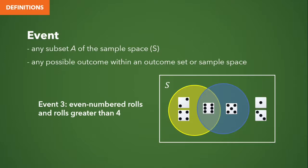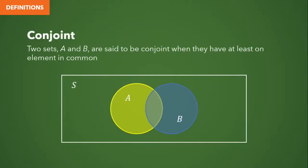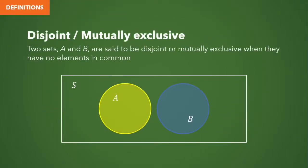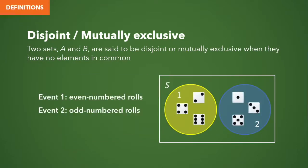When talking about sets and events, we also need to understand the concept of event composition and event relations. Two sets A and B are said to be conjoined when they have at least one element in common, and they are represented by overlapping circles. Our earlier example where event 1 is even numbered rolls and event 2 is rolls greater than 4 — these sets are conjoined because they have an element in common, which is 6. On the other hand, two sets A and B are said to be disjoint or mutually exclusive when they have no elements in common, represented by circles that are separate and not overlapping. So if event 1 is even numbered rolls and event 2 is odd numbered rolls, then they are disjoint because they have no elements in common.